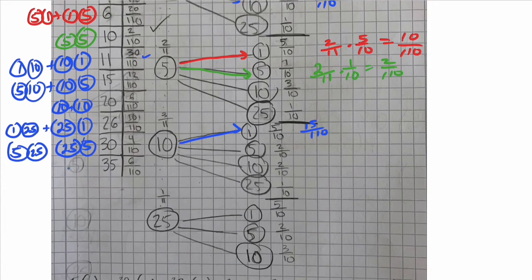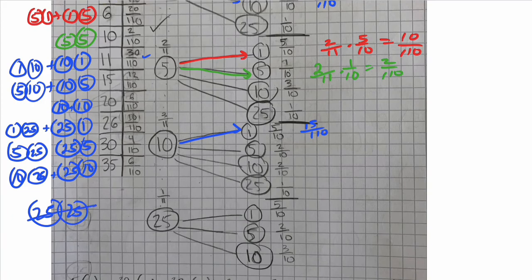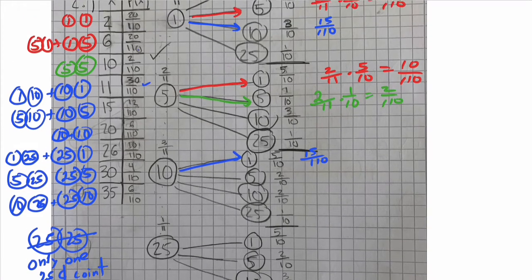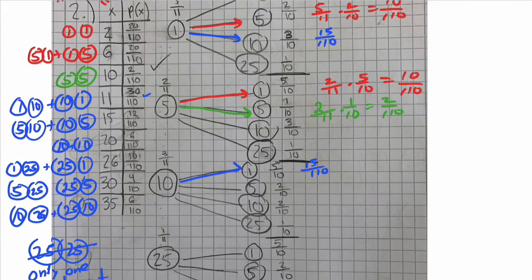The last one is thirty-five. So that's a twenty-five and a ten, or a ten and a twenty-five. Notice that twenty-five is not possible because there's only one twenty-five-cent coin. So you don't have to add that probability. Only one twenty-five-cent coin. One way to check your answer is to add up all these numerators. They should equal 110 because all these probabilities always have to equal one. And if you add these numerators, you do get one, so it is correct.